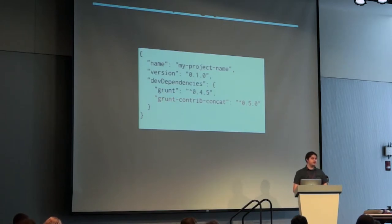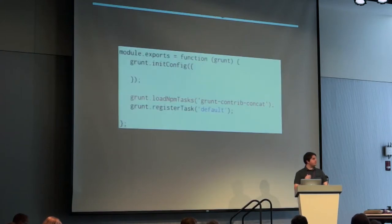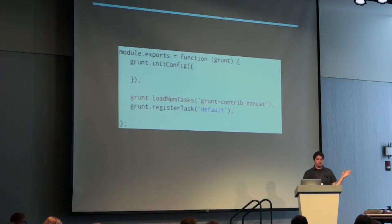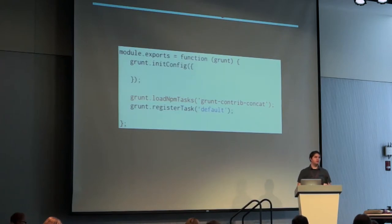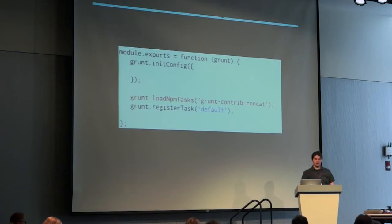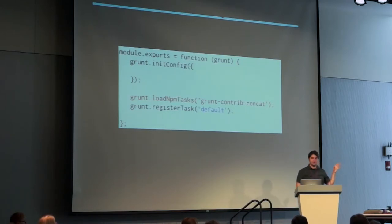Let's get to actually configuring this plugin now that it's installed. We're going to open up our Gruntfile.js. The very first step after you install a plugin is you're going to add this line to your Gruntfile: grunt.loadNpmTasks with the plugin name. All that does is tell your Gruntfile we're going to use this plugin and load it into the system. If you didn't load it, you would get an error when you tried to run this task — so even though it's installed, you still have to add this line.